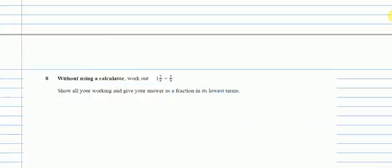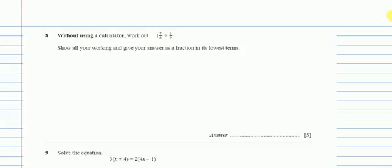Now question number 8. Without using a calculator, work out 1 and 7/8 divided by 5/9. To divide or multiply, we have to change the mixed fraction into improper, which is very simple. We multiply these two and the answer we will add. So 8 times 1 is 8 plus 7 is 15. The base never ever changes. And then it was divide 5 over 9. Now to make the question easy, we change the divide sign into multiply. Because we have switched the divide sign, we will switch this fraction upside down.